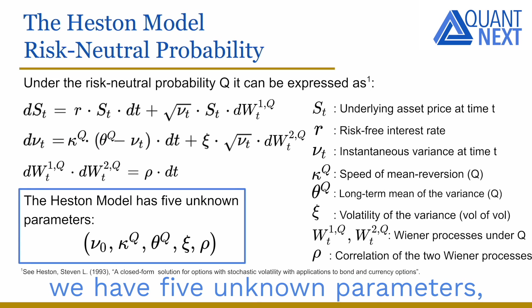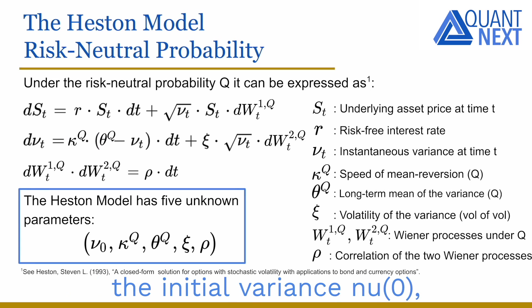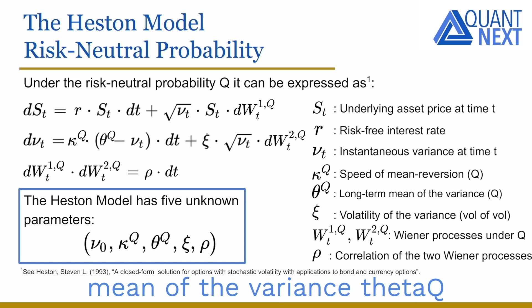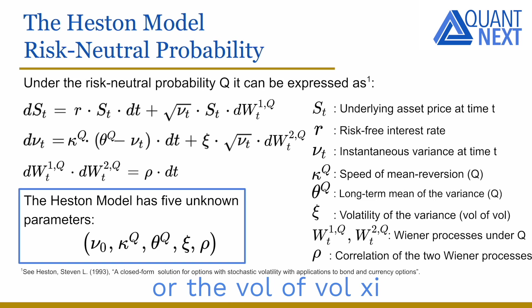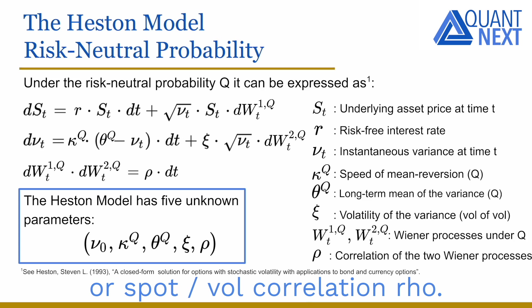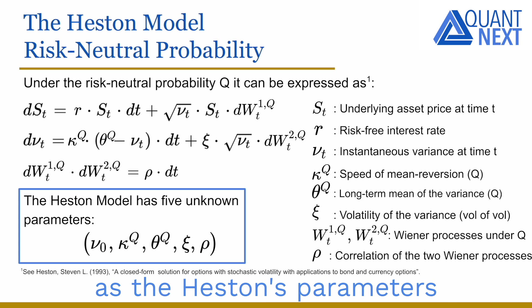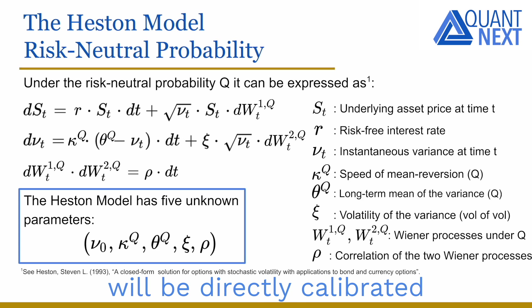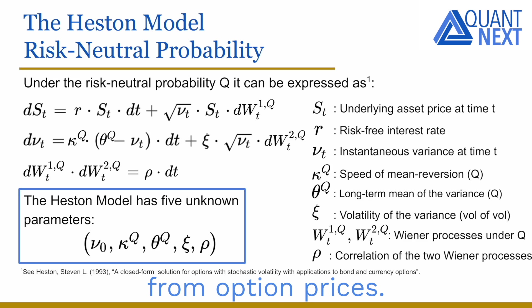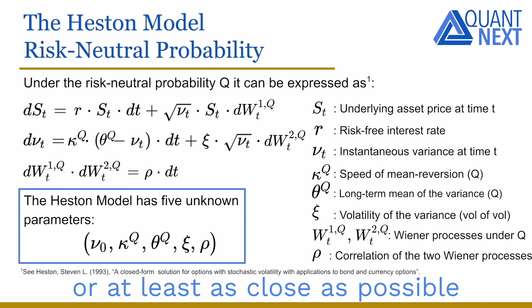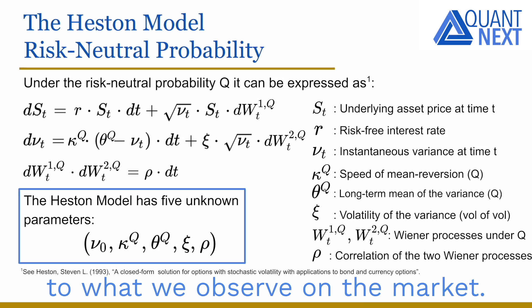Under the probability Q, we have five unknown parameters: the initial variance Nu0, the speed of reversion Kappa under Q, the long-term mean of the variance Theta under Q, the volatility of the variance (vol-of-vol) Xi, and the correlation of the two Wiener processes (spot-vol correlation) Rho. We don't really care about the value of the variance premium Lambda, as the Heston parameters under Q will be directly calibrated from option prices, chosen so that model prices are as close as possible to observed market prices.